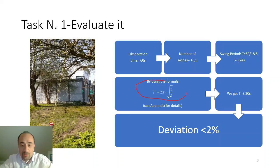If we use the formula given by the theory, the time of the single swing is 2 times pi square root of l, the length of the rope, divided by the gravity factor. And we get 3.30, quite close to the value of the experiment.